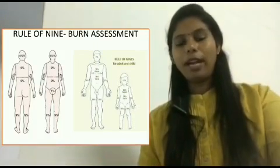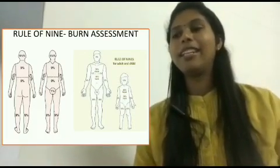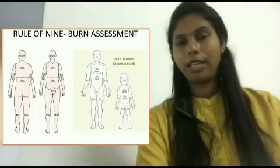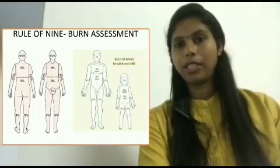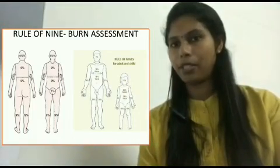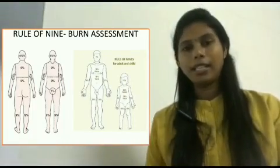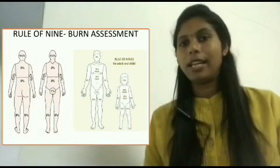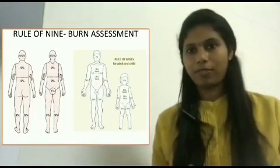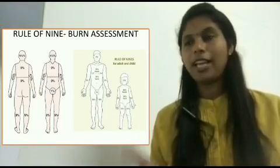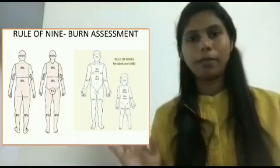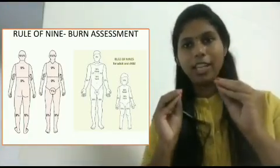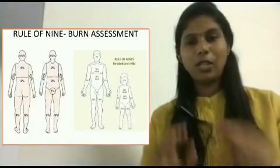For the lower half, one entire leg is 18 percent — the front part of the leg is 9 percent and the back part is 9 percent. In the same way, the other leg is also 18 percent, so total both legs is 36 percent. The perineal area is 1 percent. When we add everything up, it comes to 100 percent.